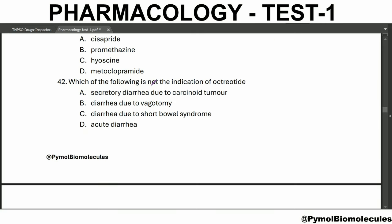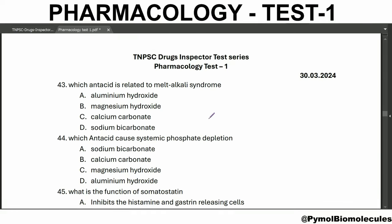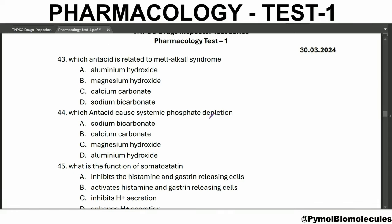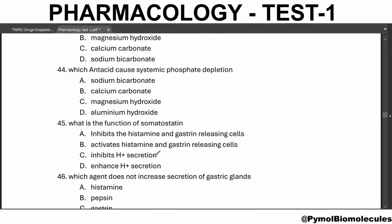Which of the following is not an indication of octreotide? Acute diarrhea is not the indication of octreotide. Indications of octreotide include secretory diarrhea, diarrhea due to vagotomy, and diarrhea due to short bowel syndrome. Which antacid is related to milk-alkali syndrome? Calcium carbonate. Which antacid causes systemic phosphate depletion? Aluminium hydroxide. What is the function of somatostatin? It inhibits histamine and gastrin releasing cells.